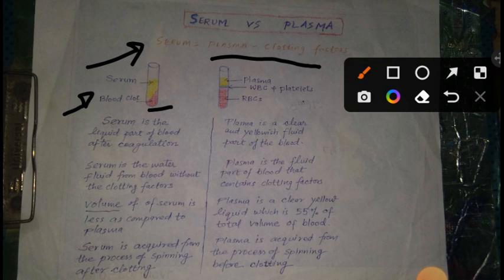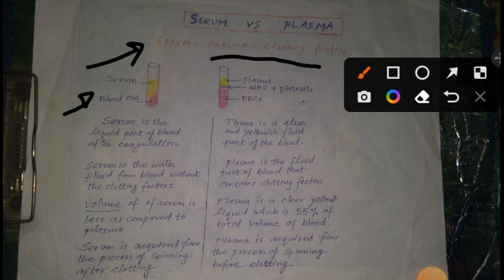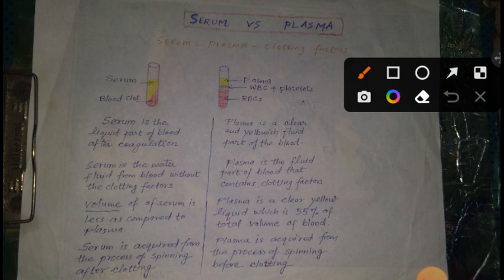So this is why we say serum is the liquid part of blood after coagulation. Toh coagulation means kya hota hai — coagulation means hoti hai blood clotting. Toh yaha par dekhi hai, is figure me blood clotting ho chukhi hai, or oopar joh fluid part bacha hai, usko hain kya bolte hai — usse hain bolte hai serum. Is wala first figure me, thik hai.